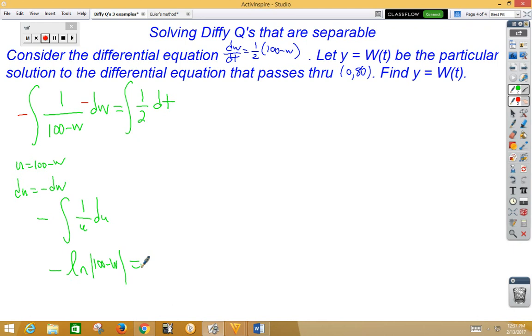On the right side, I simply have 1/2 t plus c. Very important to pay attention to the variables being used. Keep them in terms of w and t. AP does not like it when you go x and y when they want w and t.